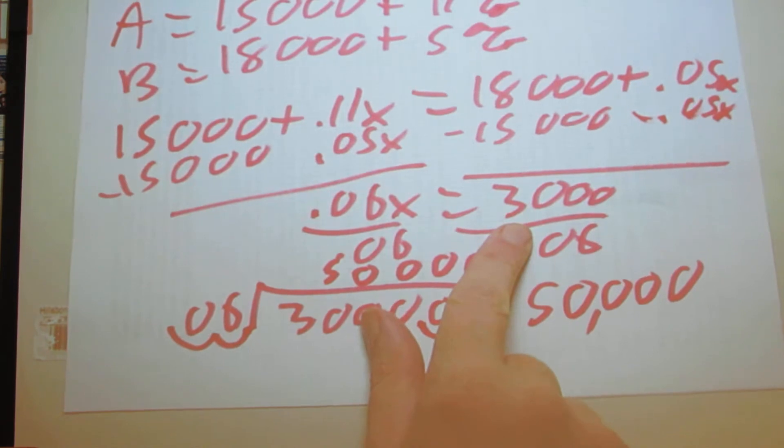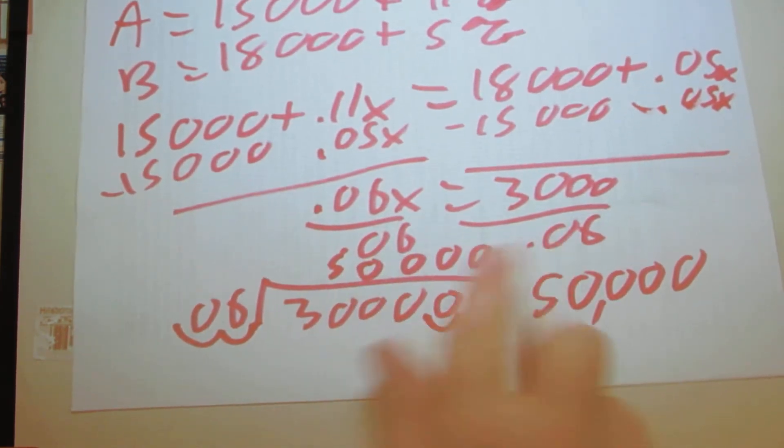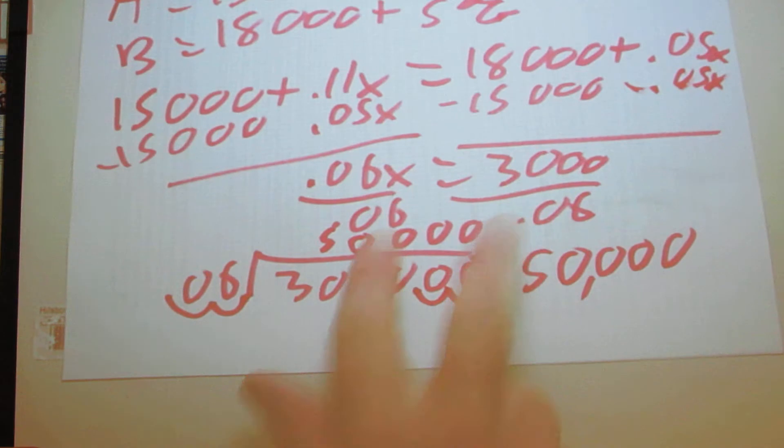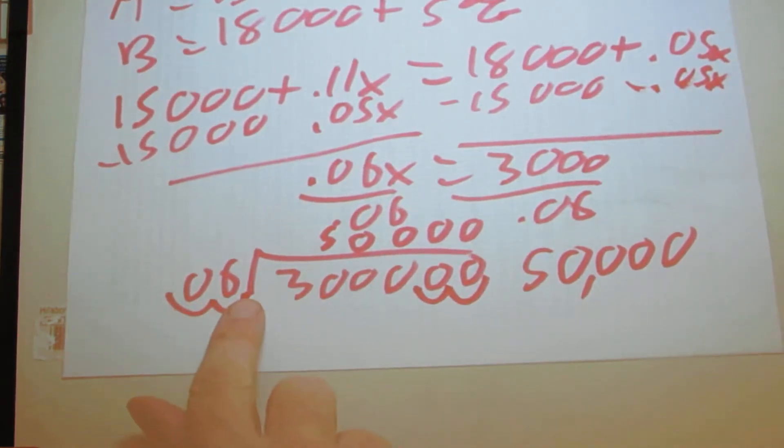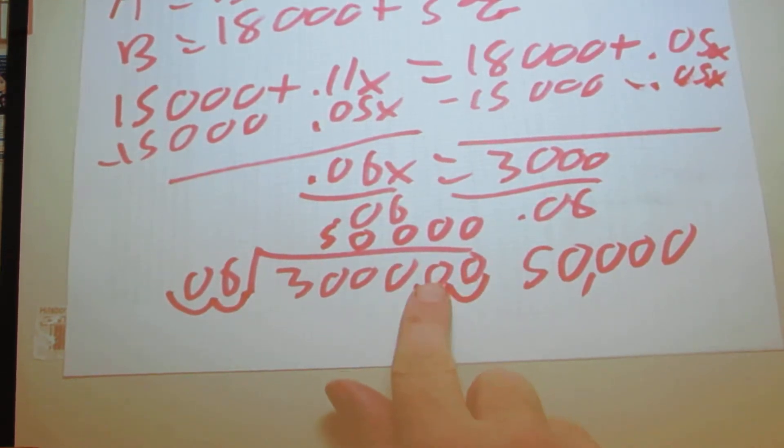Divide both sides by 0.06. We need to move the decimal over two spots, so because we did that, we also have to move it over two spots here. So to do so, we just add two zeros.